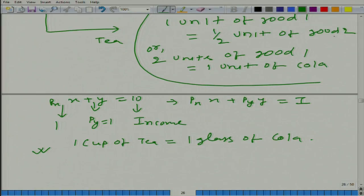In market basically you can exchange one cup of tea for one glass of cola. Let us look at your own - this is the market's valuation and this is your individual valuation. Now, in market if you give up one cup of tea, you will get one glass of cola in lieu of that cup of tea.